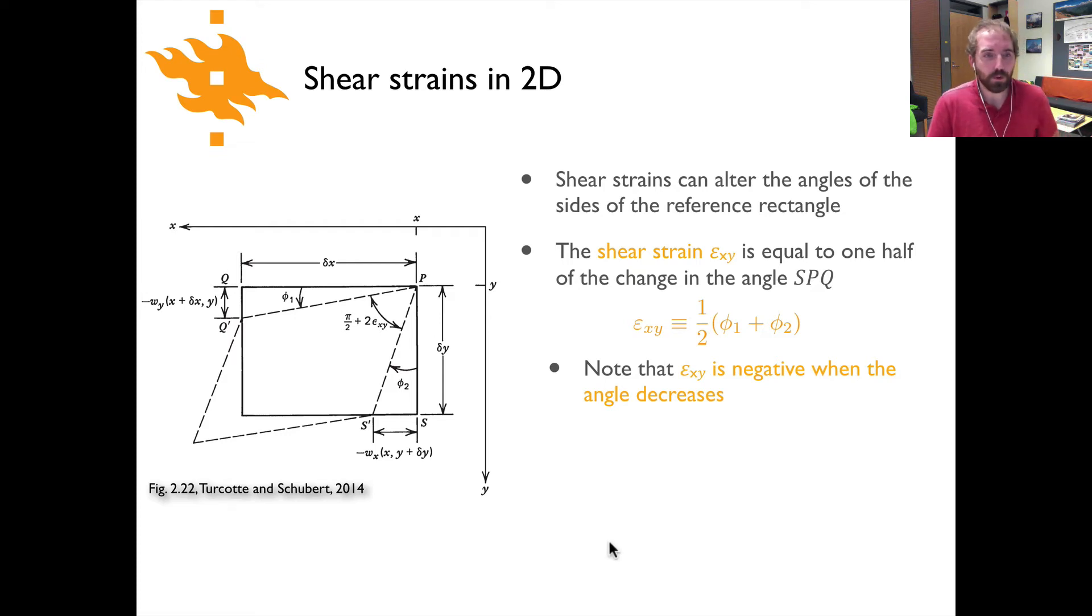And so in this case, we're looking again at a rectangle PQRS. And you can see here its initial form is rectangular and its final form looks more like a parallelogram where these dashed lines trace out the deformed shape. The shear strain in this case would be epsilon_xy, for example, is equal to one half of the change in the angle SPQ. So you can see here the angle SPQ initially is a 90 degree angle and then after deformation it is an angle that is less than 90 degrees. And so if we take phi_1 and phi_2 to be the change in angle along each of the two sides there, then you could calculate your shear strain as simply one half phi_1 plus phi_2.